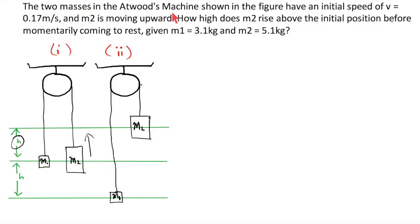The two masses in the Atwood's machine shown in the figure have an initial speed of v equals 0.17 meters per second, and m2 is moving upward. How high does m2 rise above the initial position before momentarily coming to rest, given m1 equals 3.1 kilograms and m2 equals 5.1 kilograms?